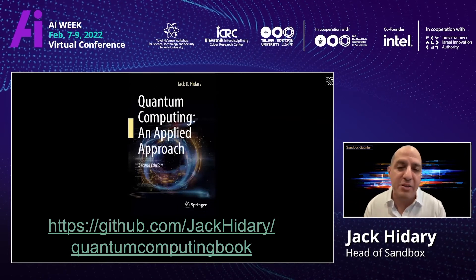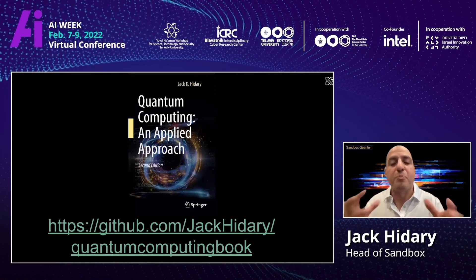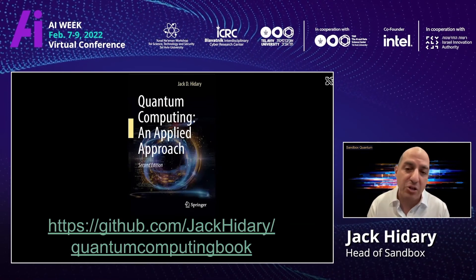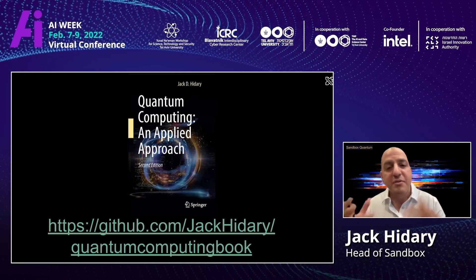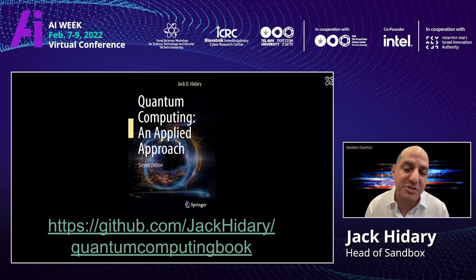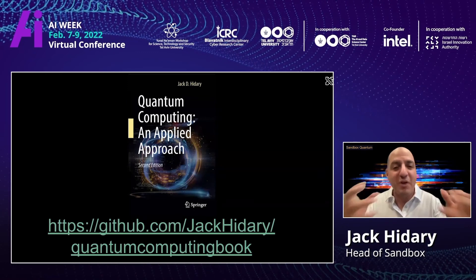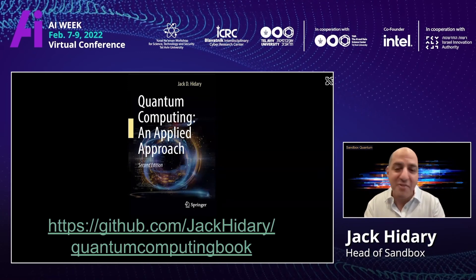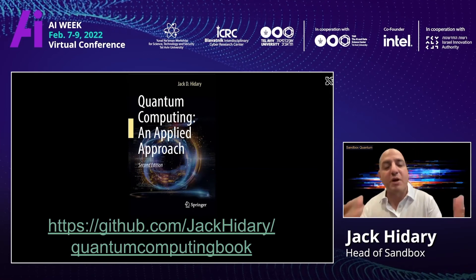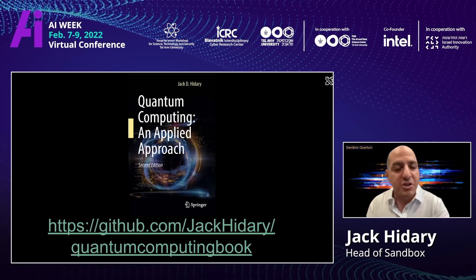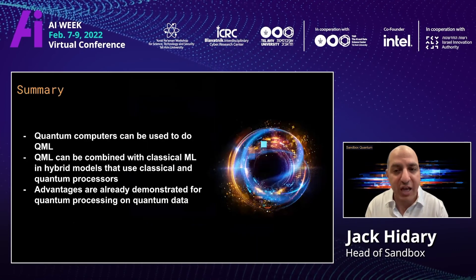People have highlighted the book, so I just want to mention that the second edition is out. But more importantly, the GitHub site has a lot of code that people can explore — there's an example of QML, quantum machine learning, on the site. So if you want to get your hands dirty and find out how to use the Python coding you know from traditional deep learning and start running it on actual quantum computers, you can download the code for free from the GitHub site.